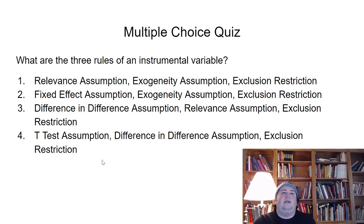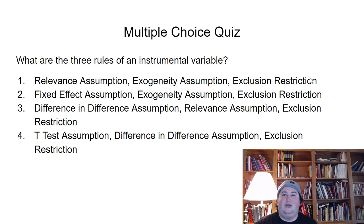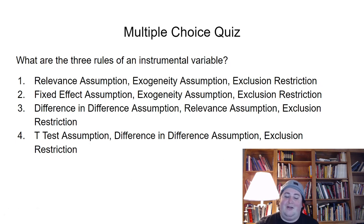Finally, the multiple choice quiz. What are the three assumptions of an instrumental variable? Option 1: relevance assumption, exogeneity assumption, exclusion restriction. Option 2: fixed effect assumption, exogeneity assumption, exclusion restriction. Option 3: T-test assumption, difference-in-difference assumption, exclusion restriction. Everyone should have got number one — relevance, exogeneity, and exclusion are the three assumptions of the instrumental variable. Thanks so much for watching, and I'll see you guys next time.